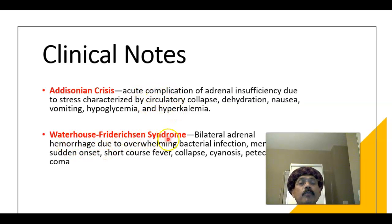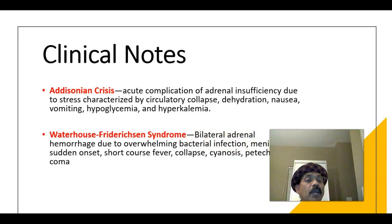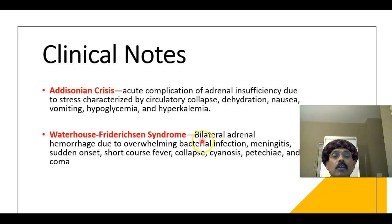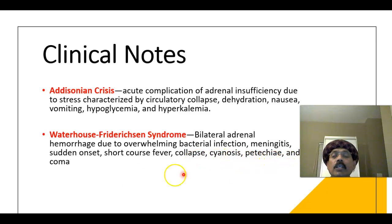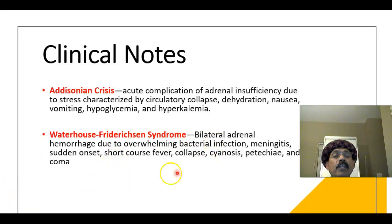Waterhouse-Friderichsen syndrome is mostly seen in children but adults may also be affected. It is associated with bilateral adrenal hemorrhage due to overwhelming bacterial infection, such as Neisseria meningitidis, Pseudomonas aeruginosa, or streptococcal infection. It may be associated with meningitis, sudden onset, short course, collapse, cyanosis, petechiae, and coma, and can lead to death very quickly. It must be managed rapidly with steroid replacement therapy and fluid balance.